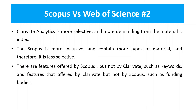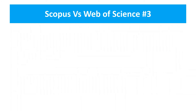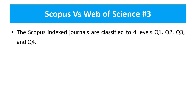There are features offered by Scopus but not by Clarivate, such as keyword analysis. This option is not available with WoS. And there are features offered by Clarivate but not by Scopus, such as funding information. For the purpose of promotion in academia, Clarivate is generally used — government agencies generally demand WoS indexed papers.